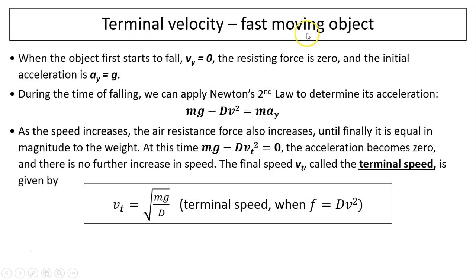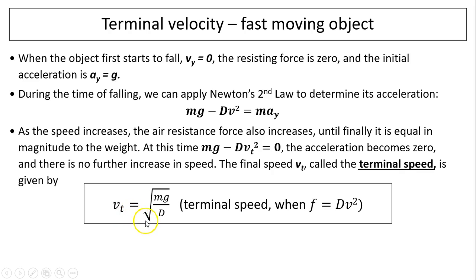Terminal velocity for a fast-moving object. For similar reasons, changing the equation for a fast-moving object, we can get terminal velocity: V_t = square root of (mg/D).